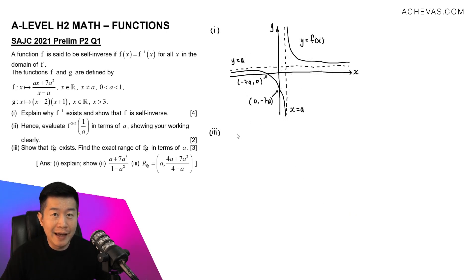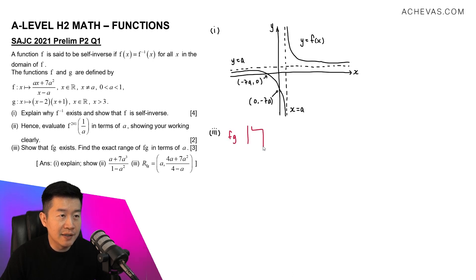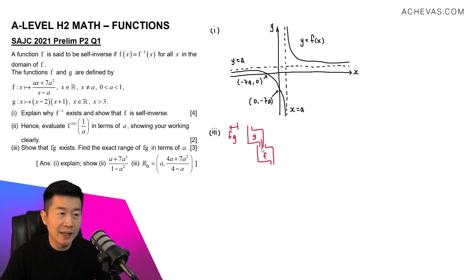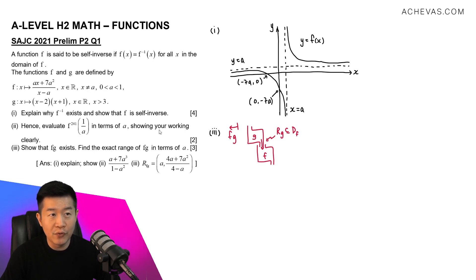For part 3, let's discuss whether the composite function fg exists. For fg to exist, we need the range of g to be a subset of the domain of f. We know the domain of f from the question: it is from minus infinity to a, or from a to infinity. What we need to find is the range of g, so let's sketch the graph of y equals g(x).